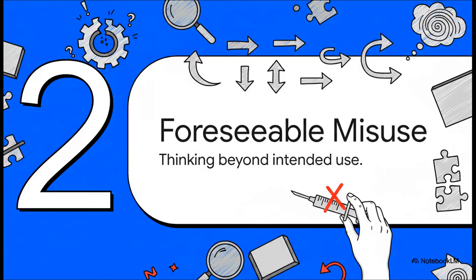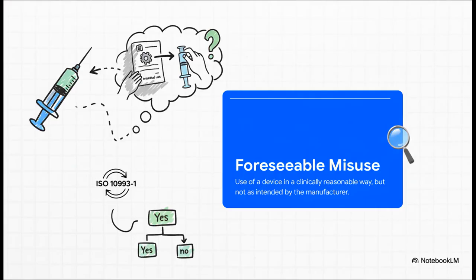Okay, so this whole risk-first philosophy naturally leads us to one of the most talked about and maybe one of the most confusing new concepts, foreseeable misuse. This one requires us to think well beyond what's written on the label. So what in the world is foreseeable misuse?